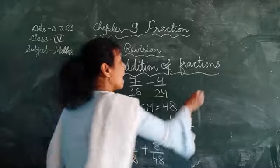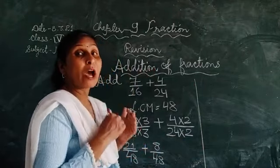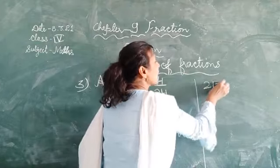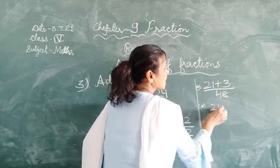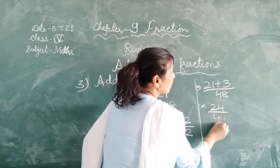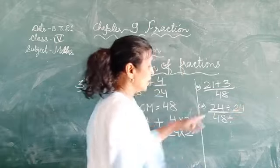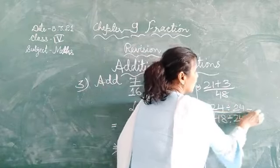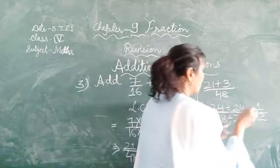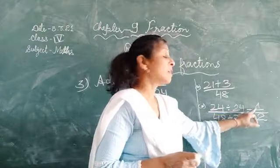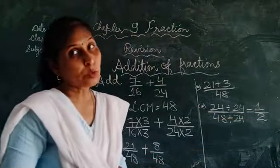Ab jab denominators same hai, humne dekhe the dono examples where denominators are same, then how we will add. Ab jab same hote hain, to humein numerators ko hum jaise karte hain add karte hain, aur common denominator likhte hain. Ab humne next step mein isko add karenge. To ye aaya hamara 29 upon 48. Ab iska lowest term find out karenge. 24 se humne isko, 24 se divide karenge. To 24 yahan aayega, aur 24 times 2 is 48. To kitna aaya humein fraction pe answer, that is 1 upon 2.